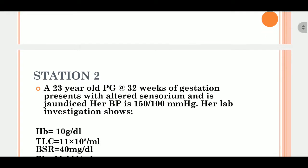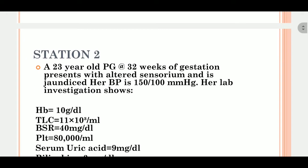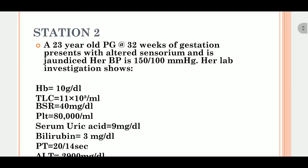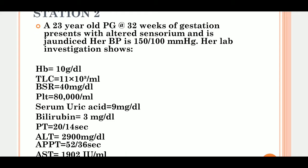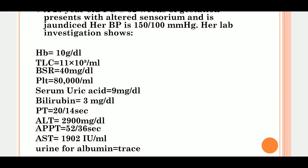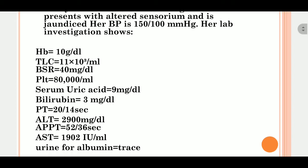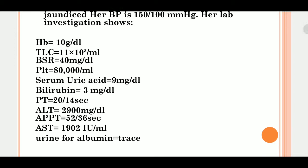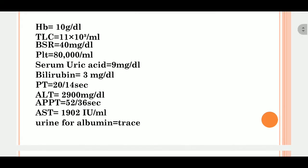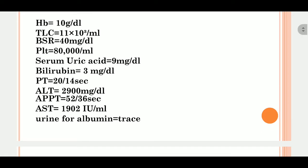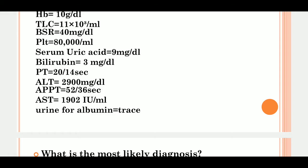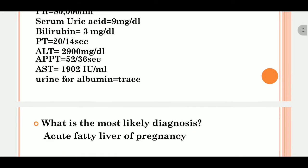Station two: a 23-year-old primigravida at 32 weeks gestation presents with altered sensorium and jaundice. Her blood pressure is 150/100. Lab investigations show hemoglobin 10 g/dL, TLC 11, cross-translator 43, BSR 40, platelets low, serum uric acid 9 mg/dL (high), bilirubin 3 mg/dL, PT 20, ALT 2900, APTT 52, AST 1902, urine albumin trace.